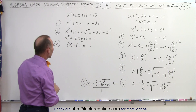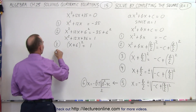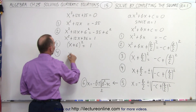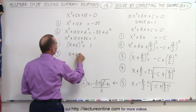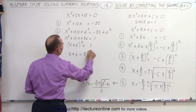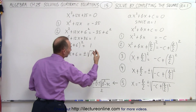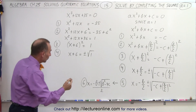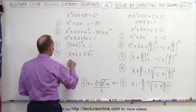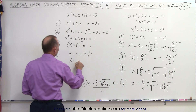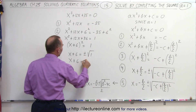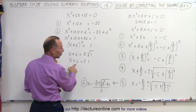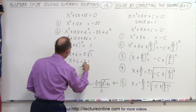Step 4 is to take the square root of both sides. Taking the square root of the left side gives us x plus 6. On the right side, we need plus or minus the square root of 1. The square root of 1 is 1, so we can write x plus 6 equals plus or minus 1.